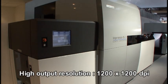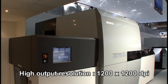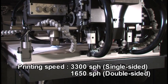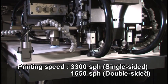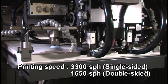High output resolution 1200 x 1200 DPI. Printing speed 3300 sheets per hour single-sided. 1650 sheets per hour double-sided.